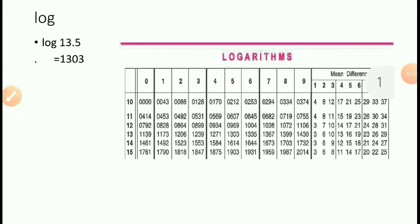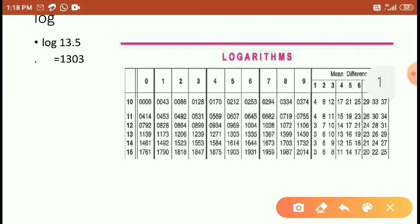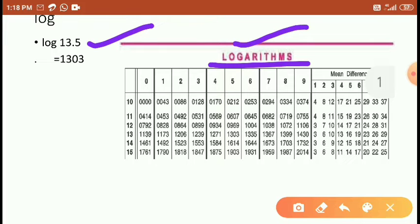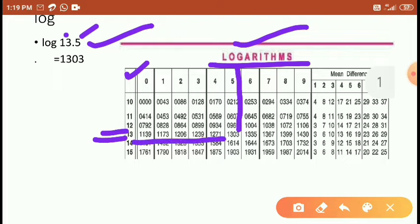Hello students, today we are discussing how to use the log table. The first example we are using is log of 13.5. From the log table, 13.5 means you go to the 13th row and the 5th column. The 5th column is here and 13 is here, so the answer is 1303.